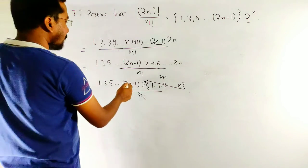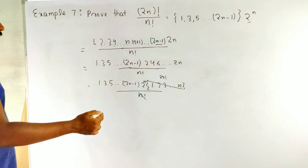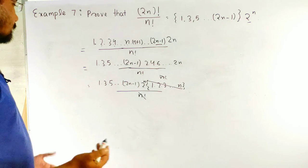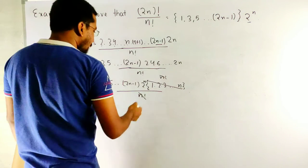Remaining is 1, 3, 5, 2 to the power n minus 1 and 2 n. Yeah. I have got the answer.